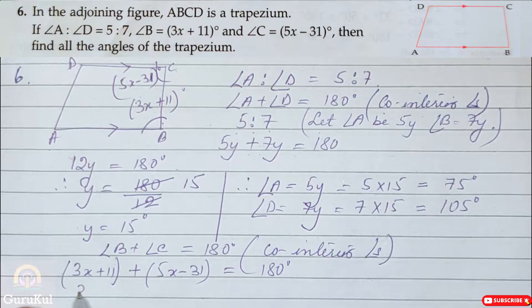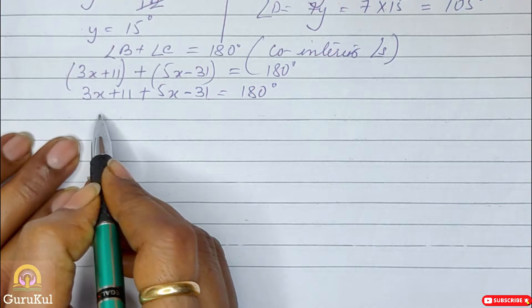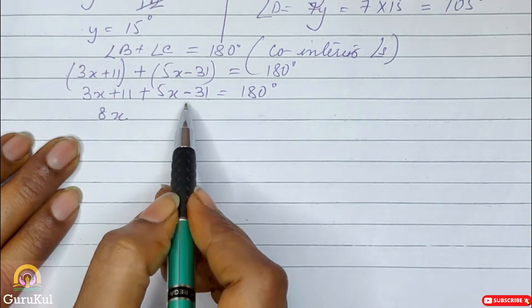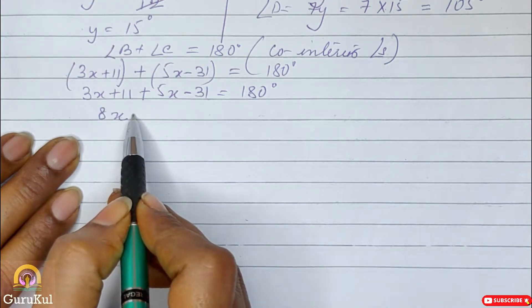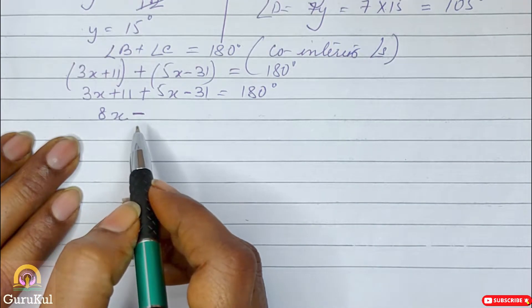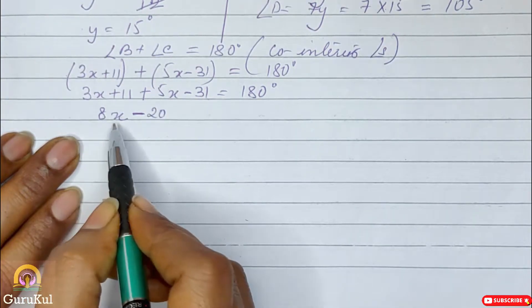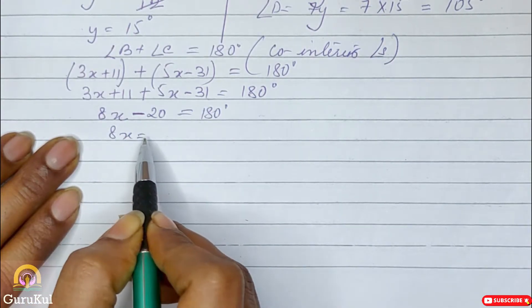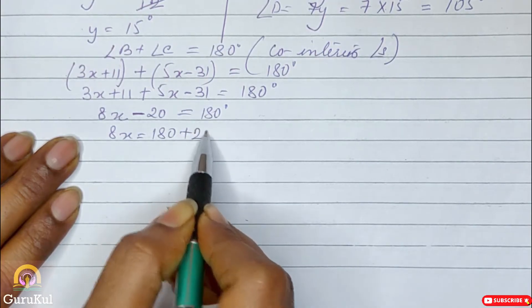So angle B is 3x plus 11 plus 5x minus 31 is equal to 180 degree. Now removing the brackets, 3x plus 11 plus 5x minus 31 is equal to 180 degree. So 5 plus 3 is 8x and minus 31 plus 11, negative number is big, hence subtraction sign, and the answer will be minus 20. So 8x minus 20 is equal to 180 degree.